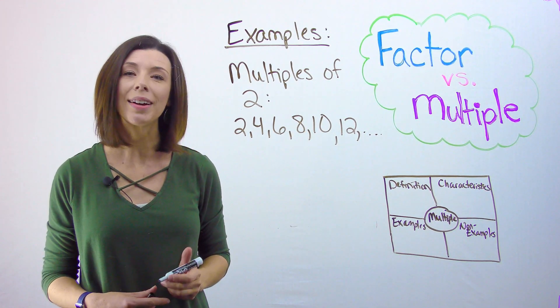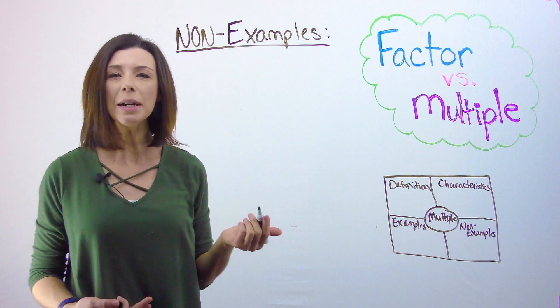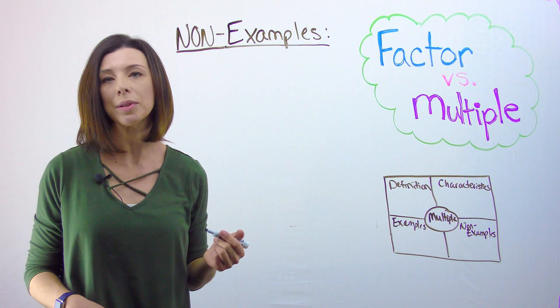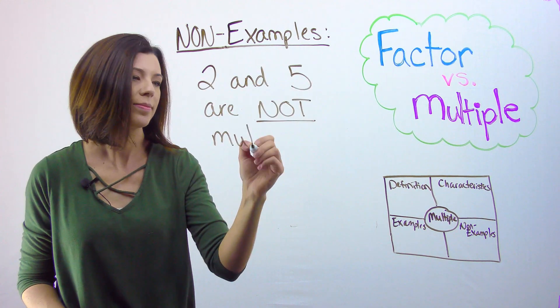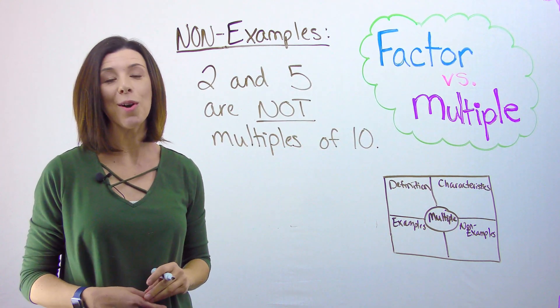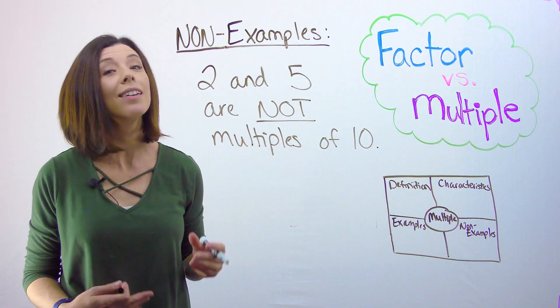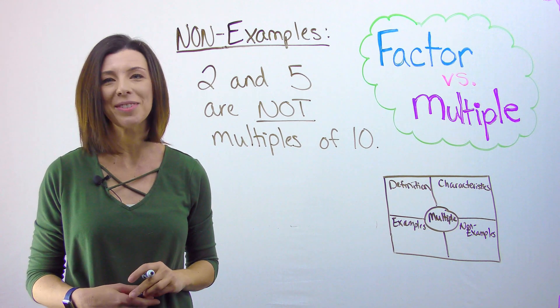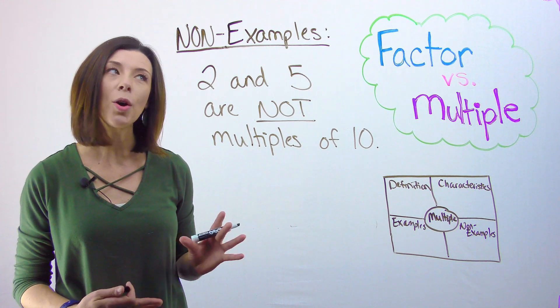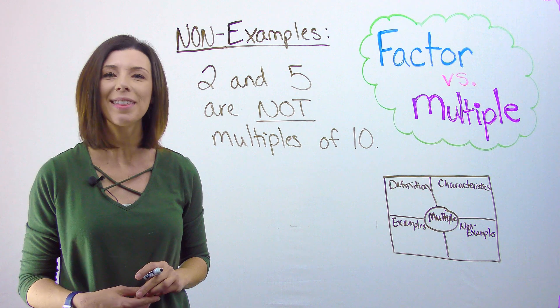Now let's look at some non-examples. I could think about 2 and 5 are not multiples of 10. By this point, you should know that 2 and 5 would be factors, not multiples of 10. See if you can come up with your own definition for multiples and write that on your Frayer model.